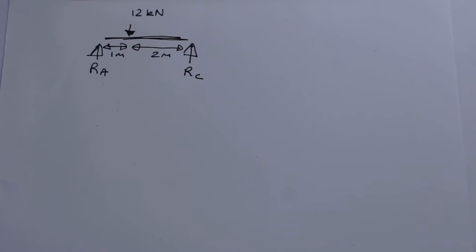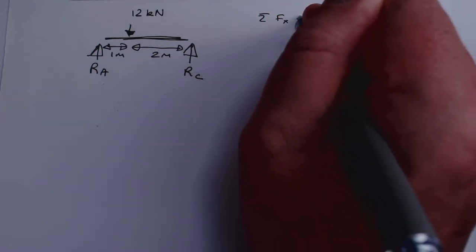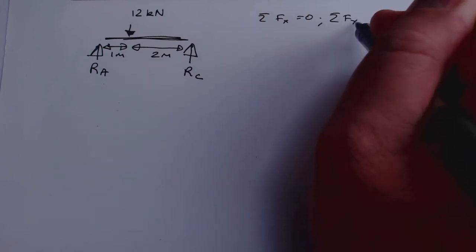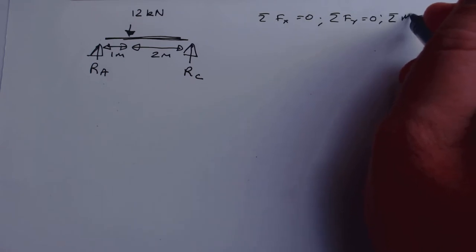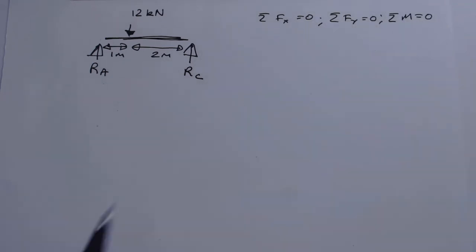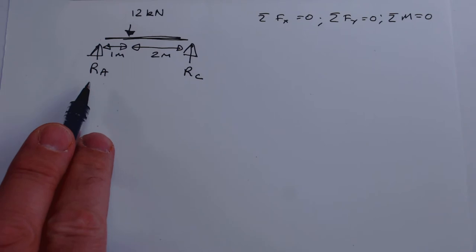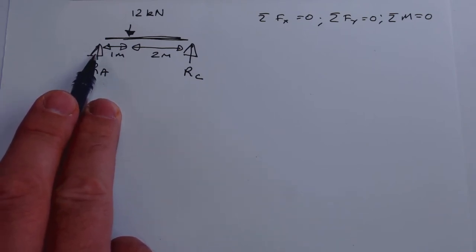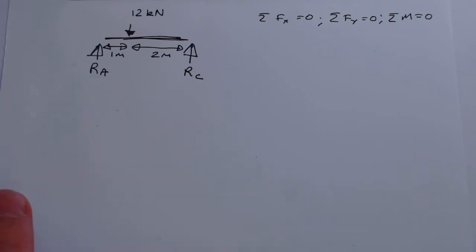To solve this problem we're going to use: the sum of forces in the x-direction equals zero, the sum of forces in the y-direction equals zero, and the sum of moments equals zero. We can take moments anywhere on the body, but normally we would pick the leftmost pivot.